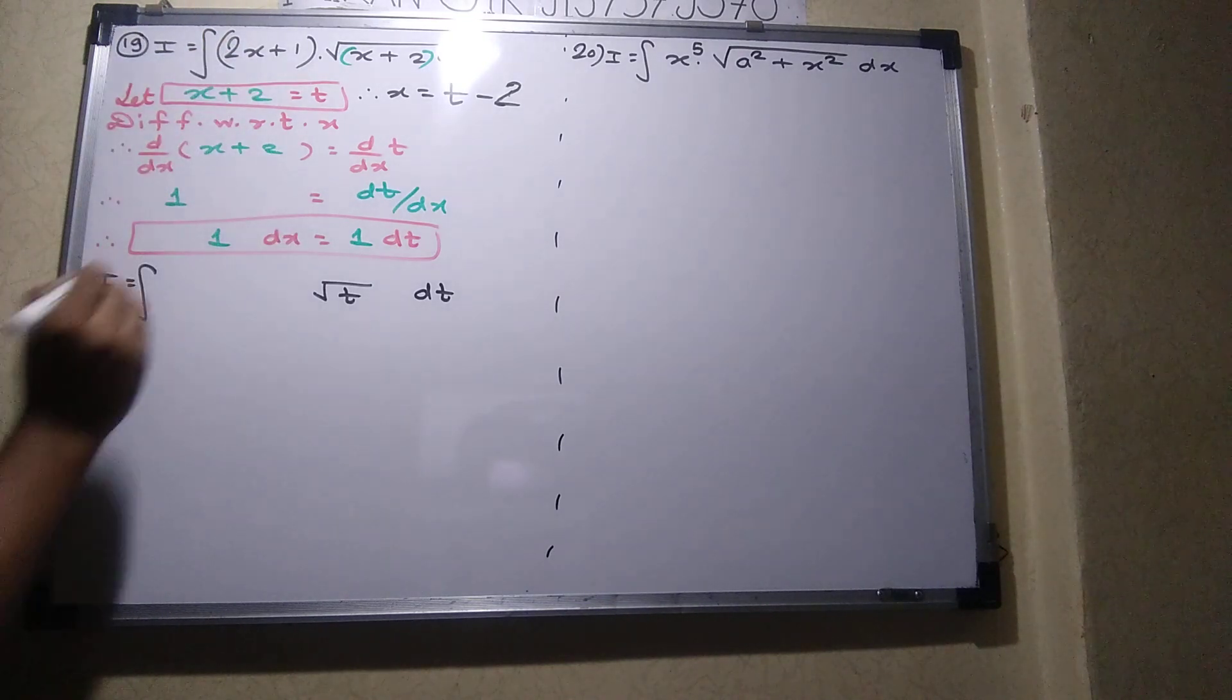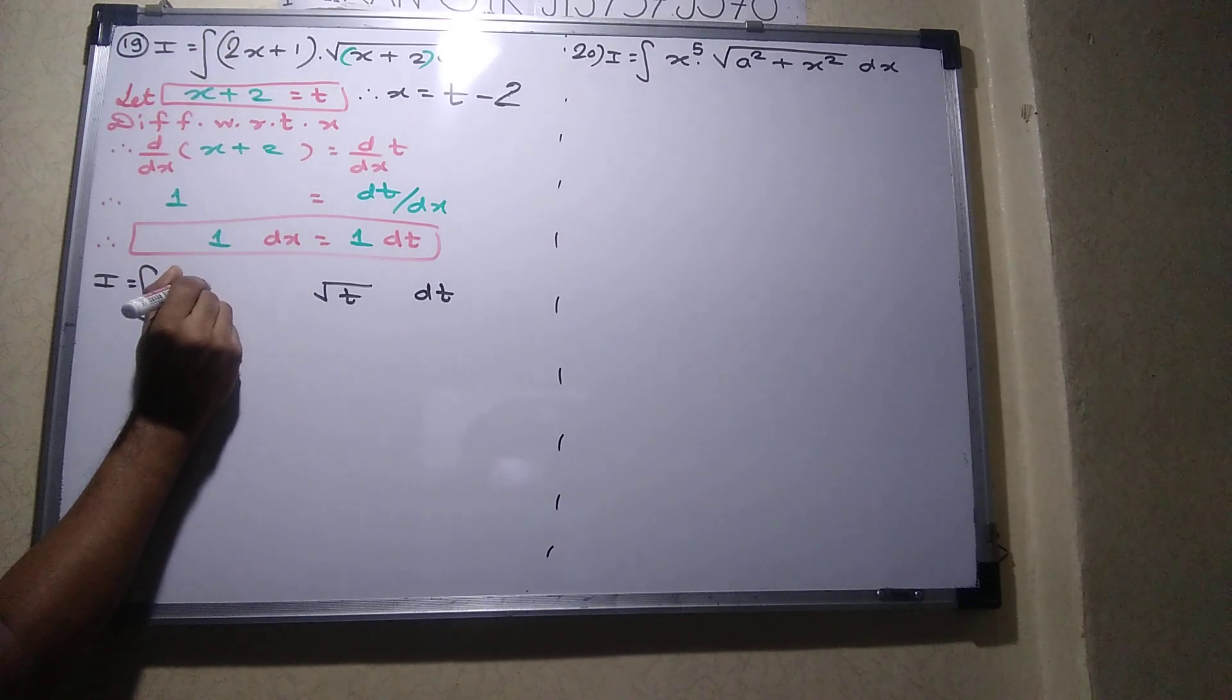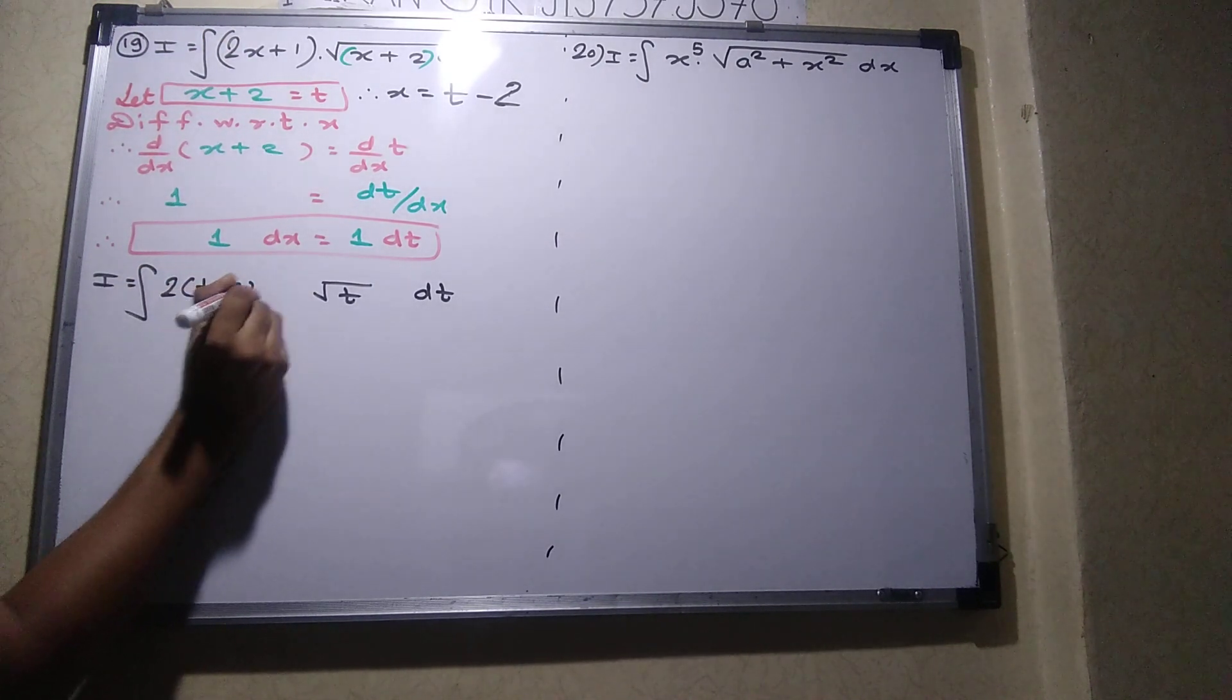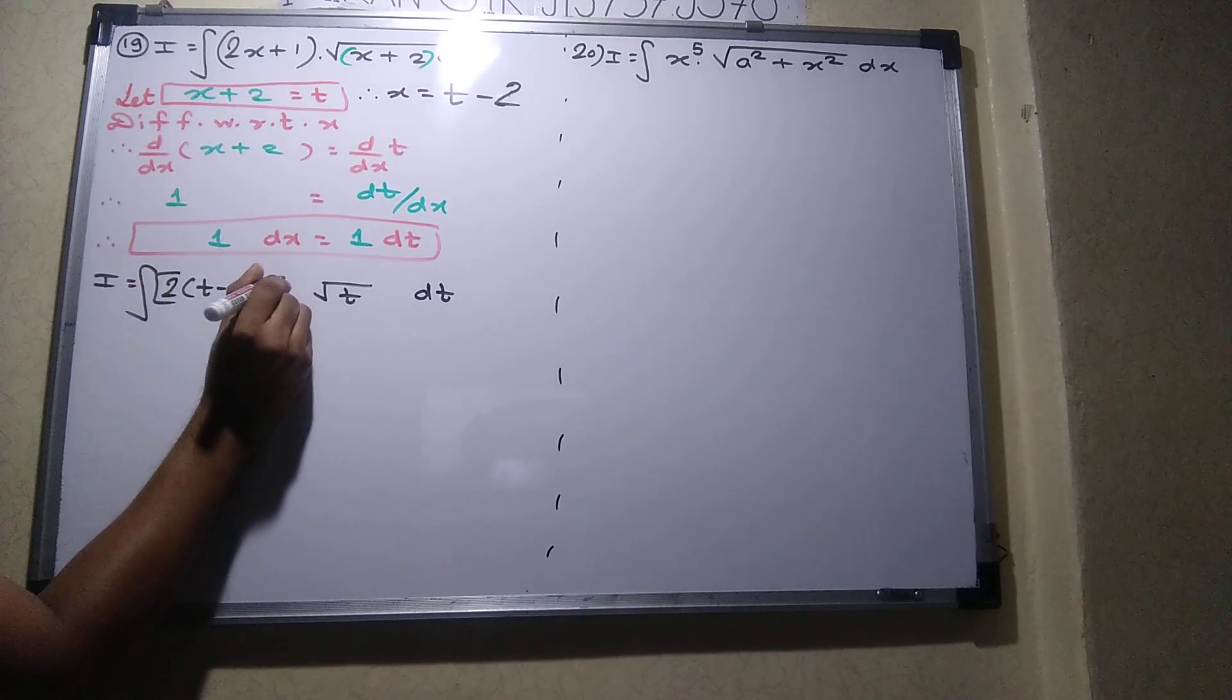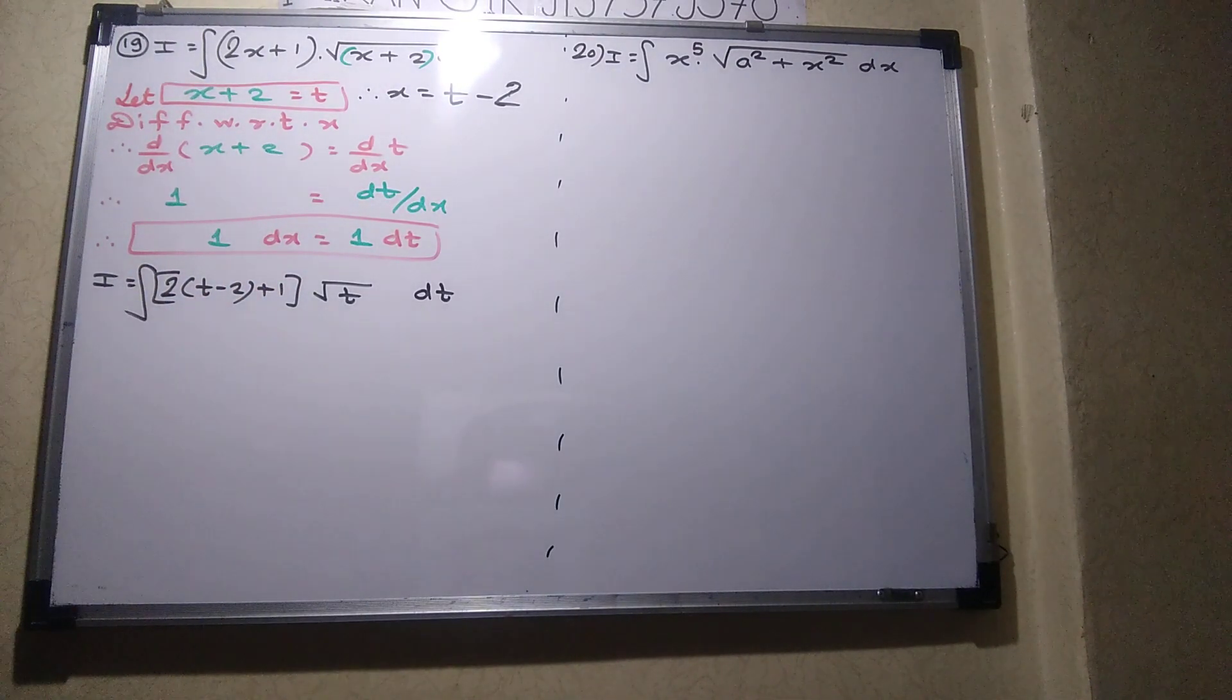Okay. So x, we will put 2 T minus 2 plus 1. Understood? We have converted entire numerical in terms of T.